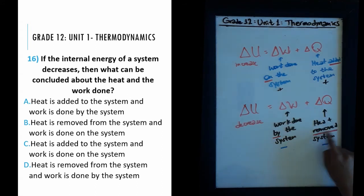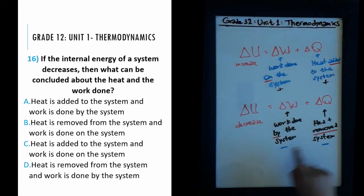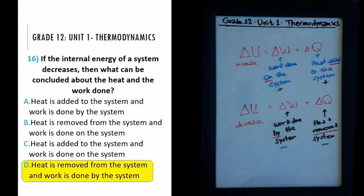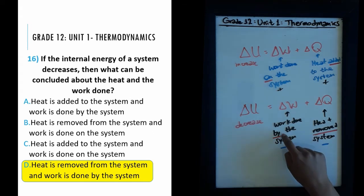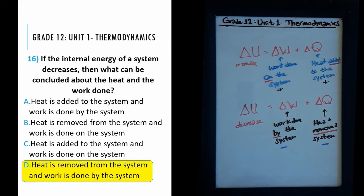We're looking for heat removed as the keyword and work done by the system. Looking carefully, we see that would be our fourth choice, Choice D: heat is removed from the system — check — and work is done by the system — check. Those are the two concepts needed to conclude there is a decrease in internal energy.